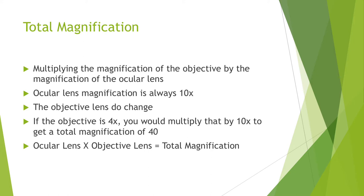Total magnification is something we use to describe how we see our specimen. Multiplying the magnification of the objective lens by the magnification of the ocular lens is how we find total magnification. The ocular lens magnification is always 10x. If the objective lens is 4x, you would multiply that by the ocular lens magnification of 10x to get a total magnification of 40.